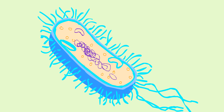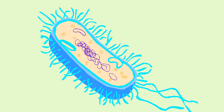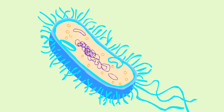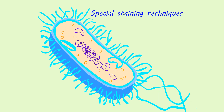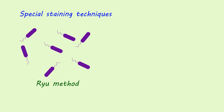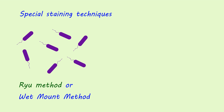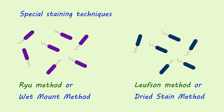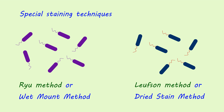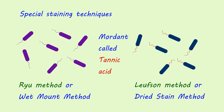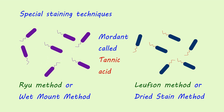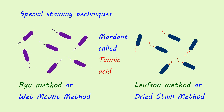Bacterial flagella are very thin structures that cannot be seen with a light microscope. Hence, special staining techniques — the wet-mount method and the dry-stain method — are used, or the flagella are coated with mordants. In both methods, a mordant called tannic acid is used to stain the flagella.